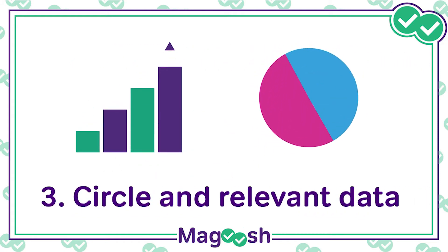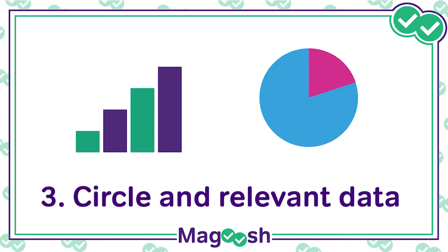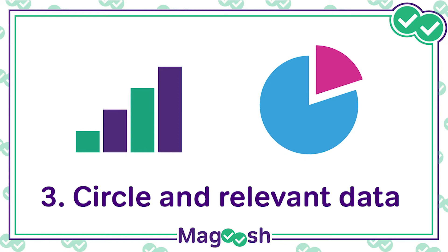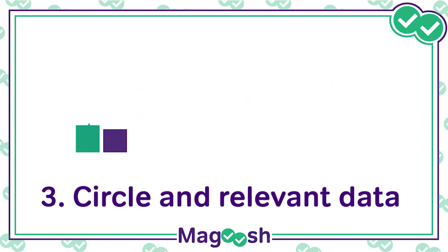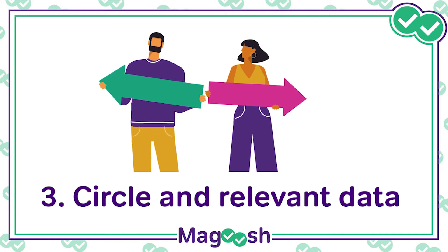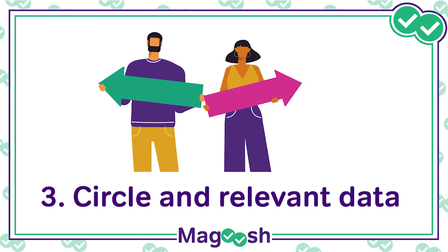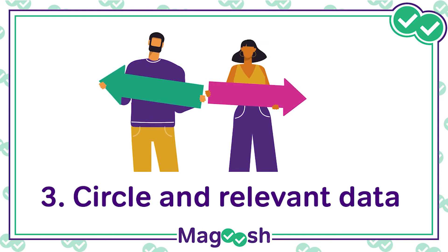Tip 3: Circle any relevant data. Once you've located and underlined the basic theories of each scientist, identify what data they are using to support their theory. Are there any graphs or figures involved? Make sure to draw on the figure exactly what is described by each theory and label it Student 1, Student 2, etc. Consider whether any of the supporting data is contradictory. For example, if Student 2's theory is correct, does that make Student 3's theory incorrect? If no support is provided for a theory, make sure to write 'No Support' next to the paragraph.